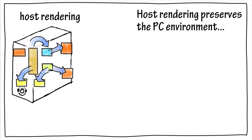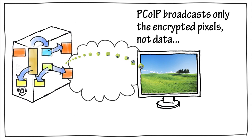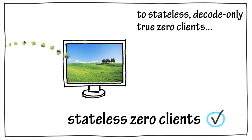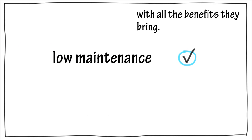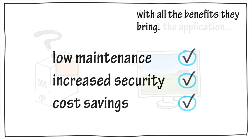which degrades application performance as it waits for the rendering to complete. Host rendering preserves the PC environment so that applications perform as they should. Once the image is rendered on the host, the PCoIP protocol broadcasts only the encrypted pixels, not the data, across the network to the client, which makes it possible to have stateless, decode-only devices — we call them True Zero clients — with all the benefits they bring, such as low maintenance, increased security, and cost savings.